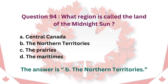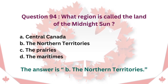Question 94: What region is called the Land of the Midnight Sun? A. Central Canada. B. The Northern Territories. C. The Prairies. D. The Maritimes. The answer is B. The Northern Territories.